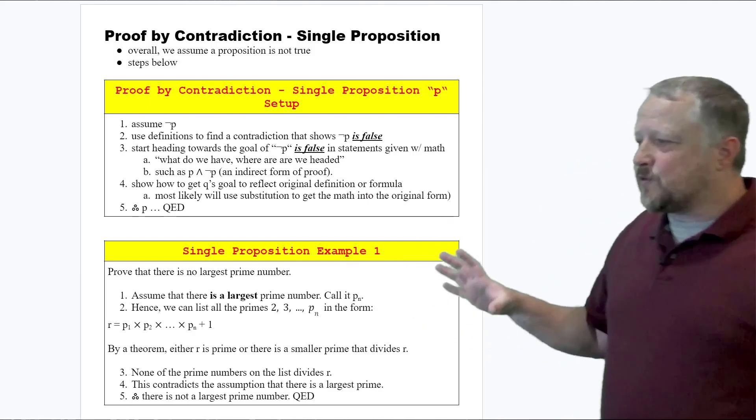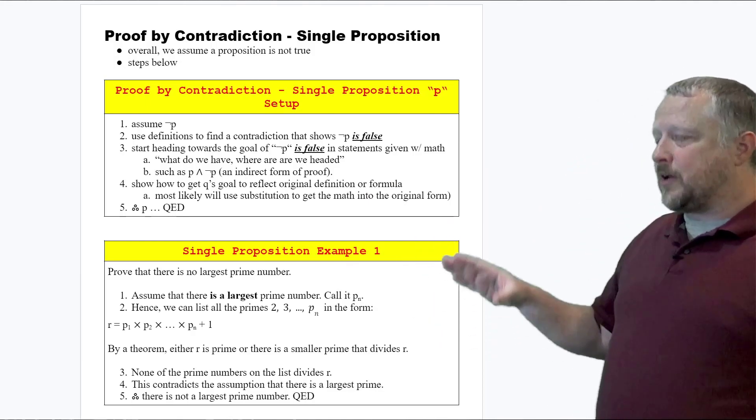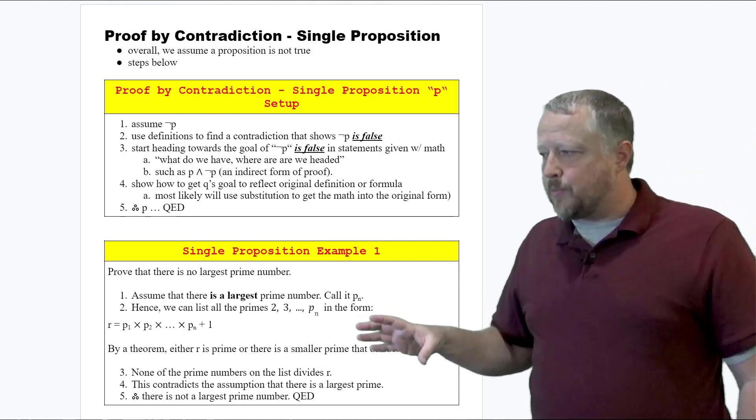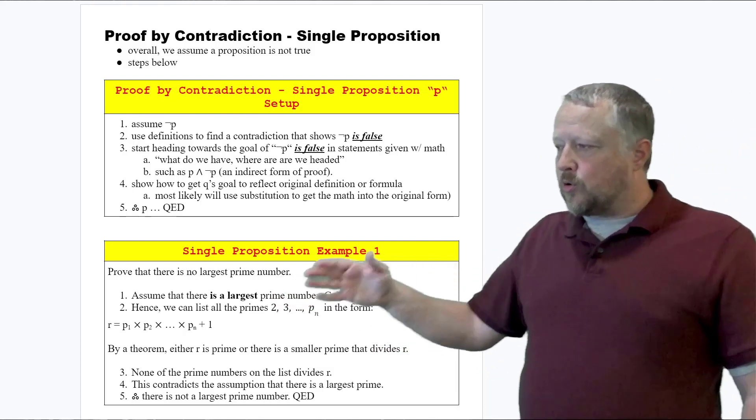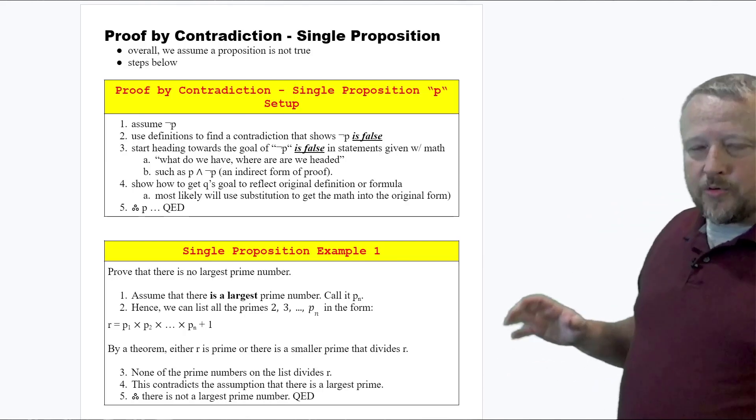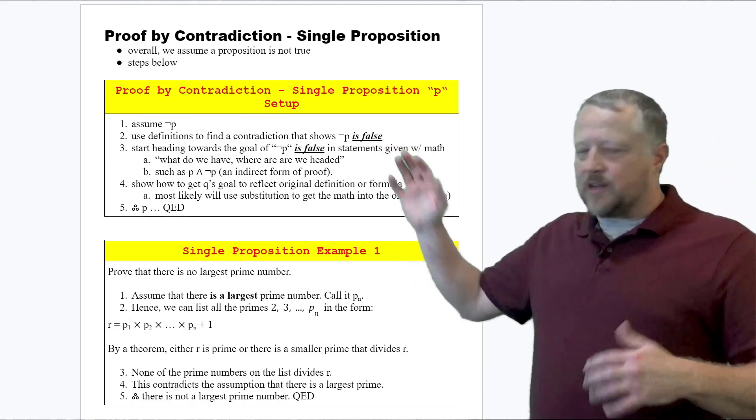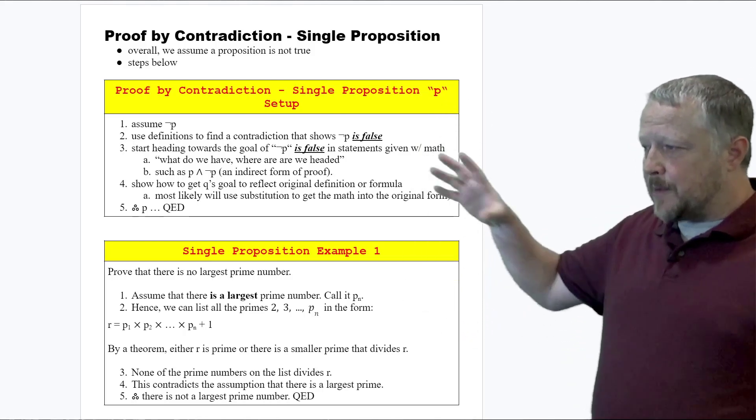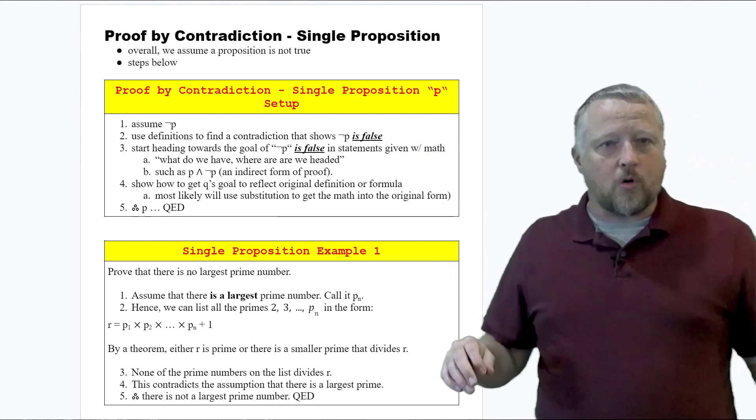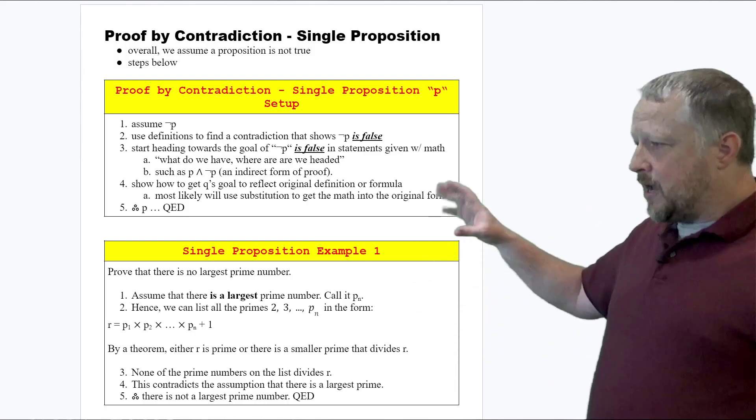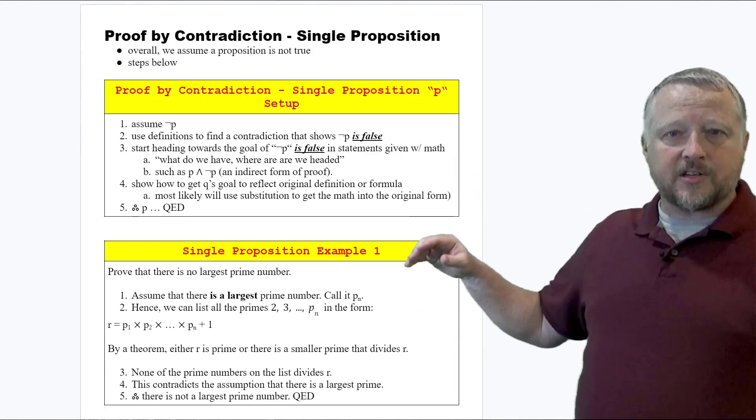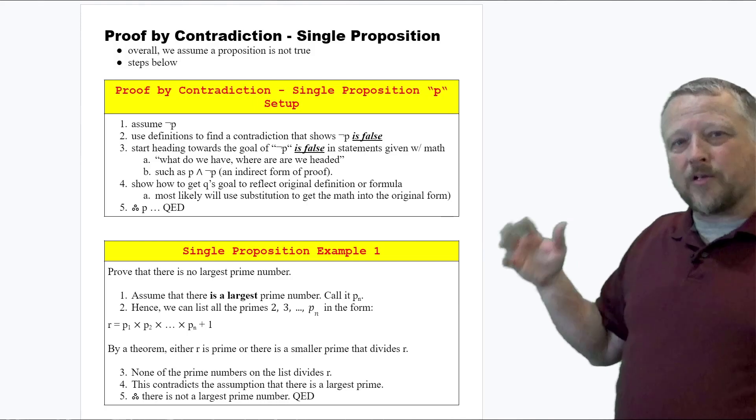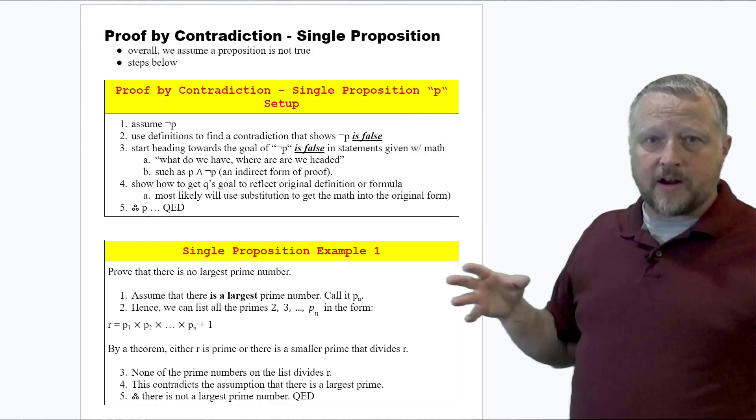In this very simple single propositional example, we're trying to prove that there's no largest prime number, which you and I know prime numbers go infinitely. Following the exact steps we have up here, three and four are always going to be the more interesting ones. Notice there's not five and six on this one because there's less to work with in this example.